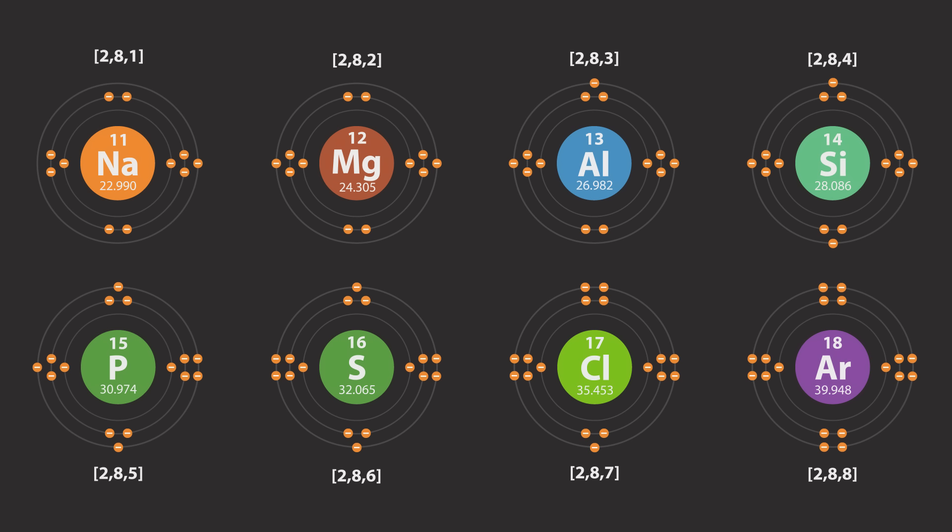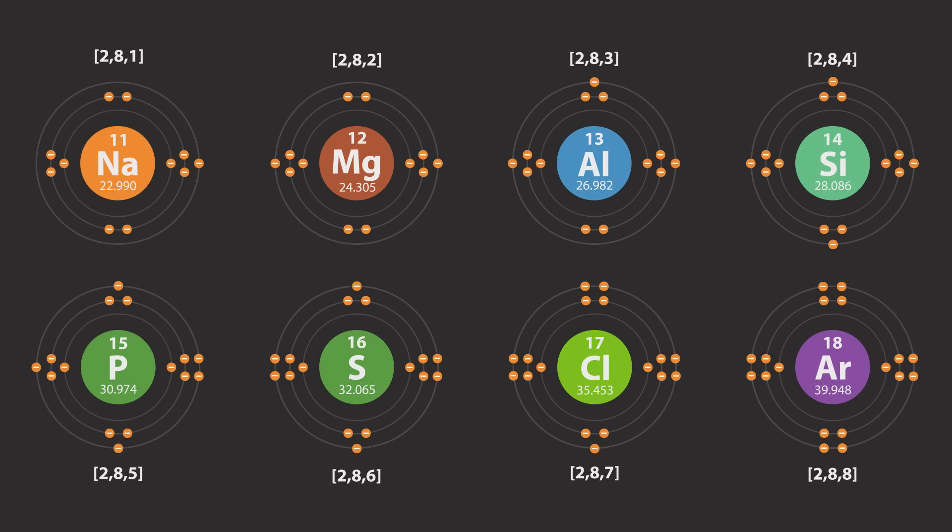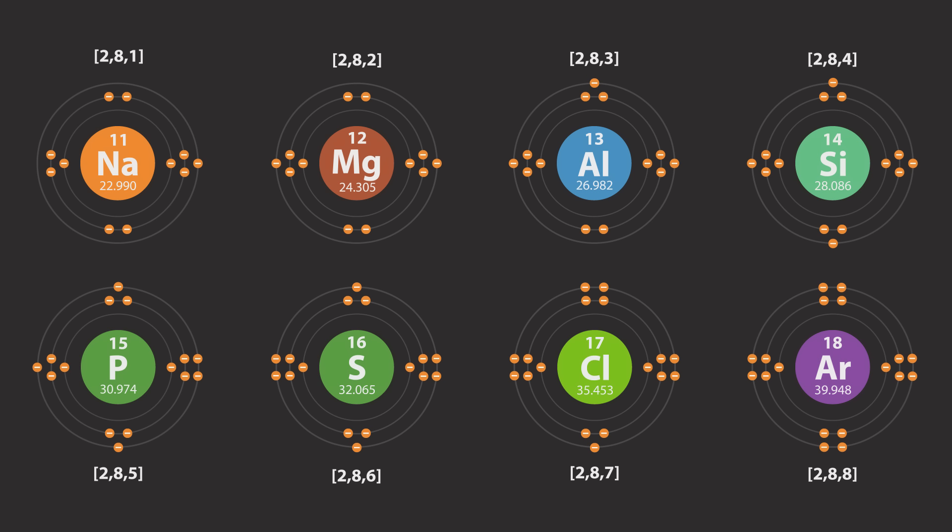You will see the same trend for the group number and the number of valence electrons as you did in the elements for the second period. Notice that the electrons for all elements in the third period occupy three electron shells.